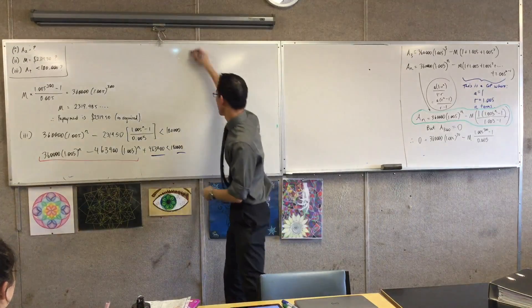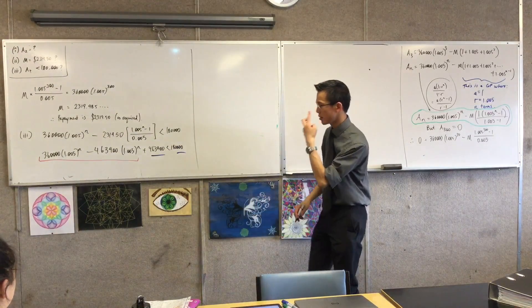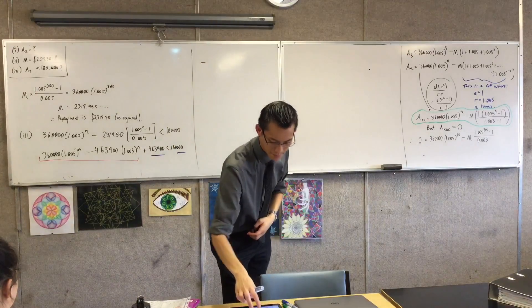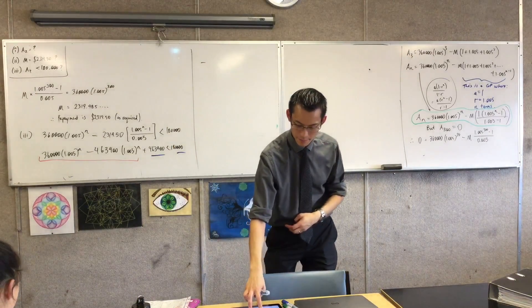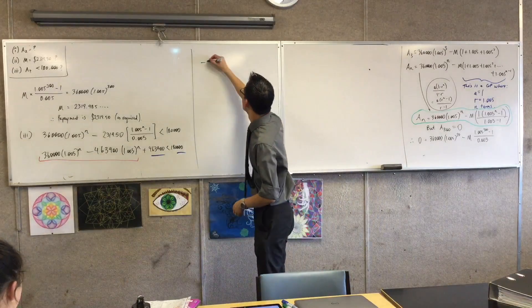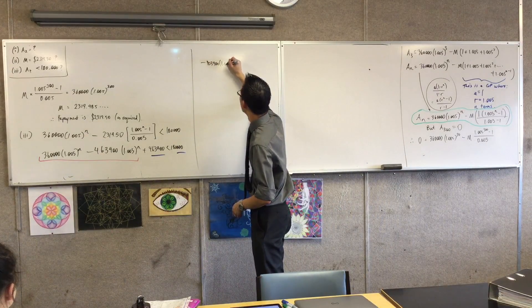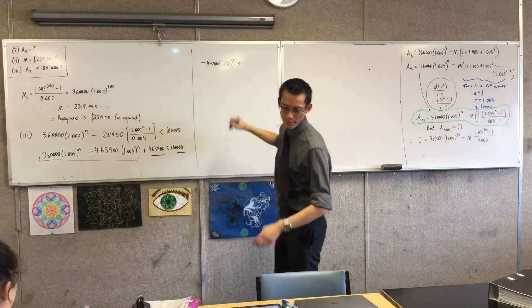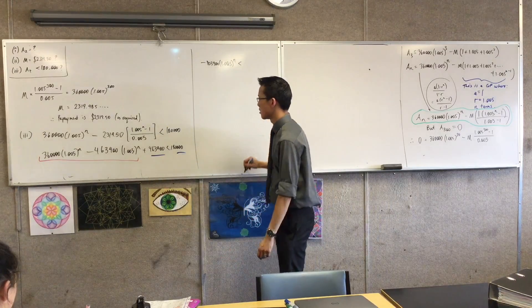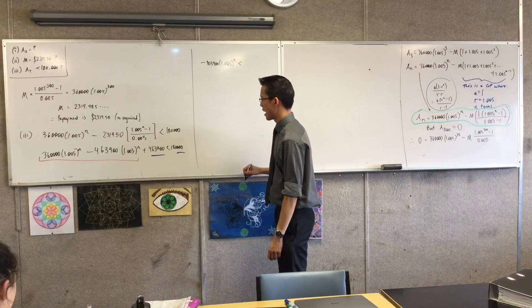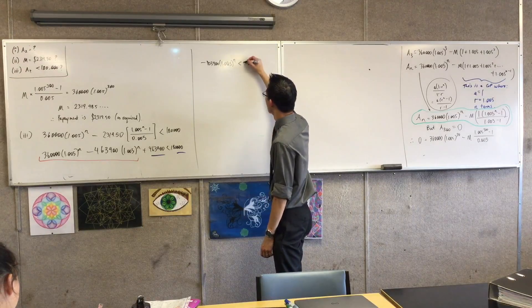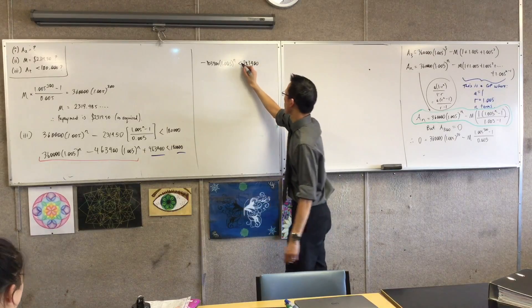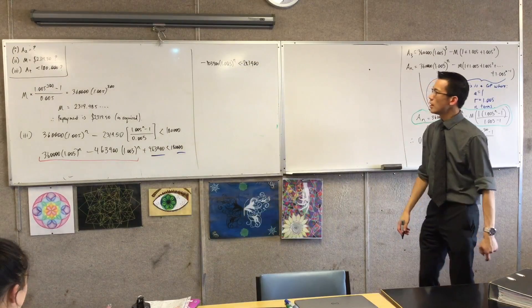and then I've got a couple of constant terms which I want to gather on one side. So, let's follow that through and see what happens. So, I'm going to get minus 2,839. But, it's also minus. Oh, yes, that's right. Okay.